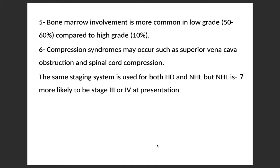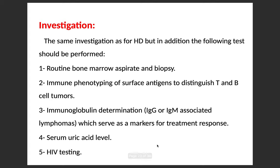The same Ann Arbor staging system is used for both Hodgkin's disease and non-Hodgkin's lymphoma, but in non-Hodgkin's lymphoma it is more likely to be stage 3 or 4 at the time of presentation. Regarding investigations, the same investigations as for Hodgkin's disease apply, but in addition: routine bone marrow aspirate and biopsy, immune phenotyping of surface antigens to distinguish T and B cell tumor, immunoglobulin determination — IgG or IgM associated lymphoma — which serves as a marker for treatment response, serum uric acid level, and HIV testing.